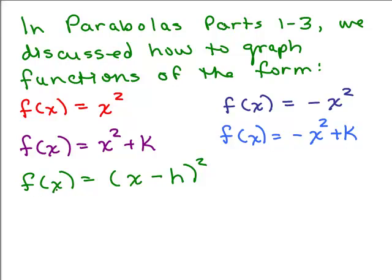So the last type we did was f(x) equals (x minus h) squared, and we're just going to add on and say what would it be if it was in the form, a minus sign in front of it, (x minus h) squared. Well, the basic difference here is that it will be opening downward instead of upward.